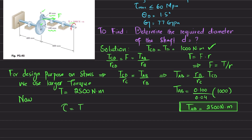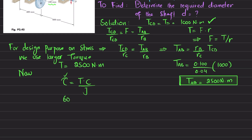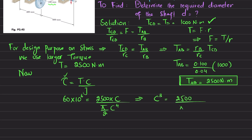Using the shear stress formula τ = T·c / J, and substituting J = π/2 · c⁴ for a solid circular shaft, we set the maximum shearing stress equal to 60 MPa: 60 × 10⁶ = 2500 × c / (π/2 · c⁴), which simplifies to solving for c³.